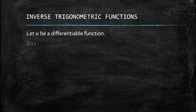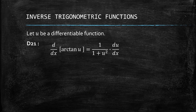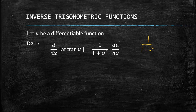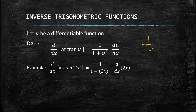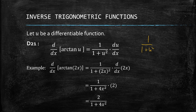For D21, we have arctan. The pairs here are tangent and cotangent, and they have the same form. The formula is 1 over 1 plus u squared, times du/dx. For cotangent it's negative; for tangent it's positive. So let's have an example: arctan of 2x. We substitute 2x for u, giving us 1 over 1 plus (2x) squared, times the derivative of 2x, which is 2. Simplifying, we get 2 over 1 plus 4x squared.